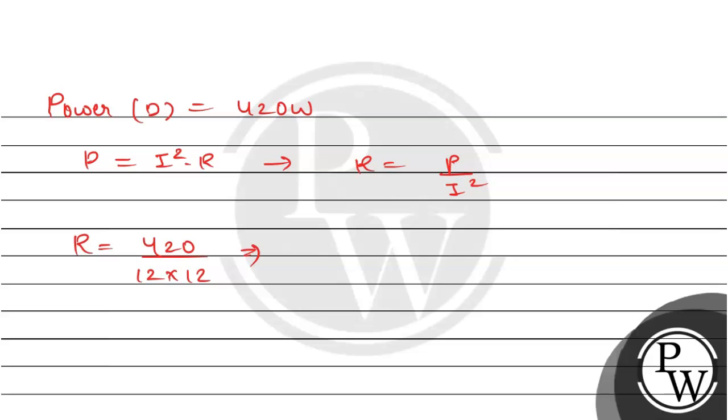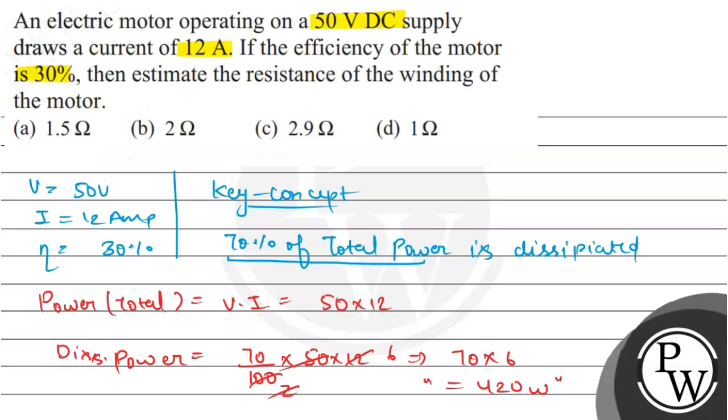And after calculating this you will get resistance value as 2.9 ohm. So your final answer is 2.9 ohm and now let's check our options. So C option which is 2.9 ohm is the correct option. I hope you understood, thank you so much, take care.